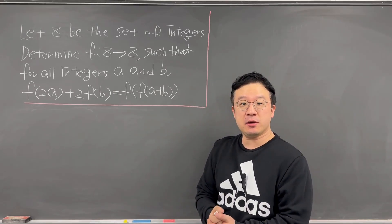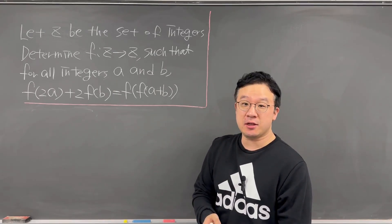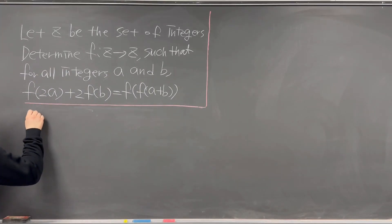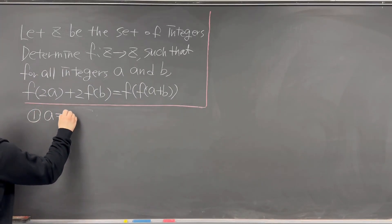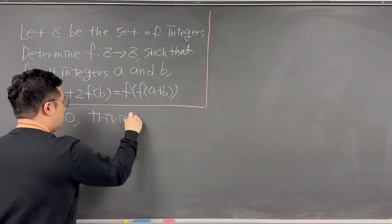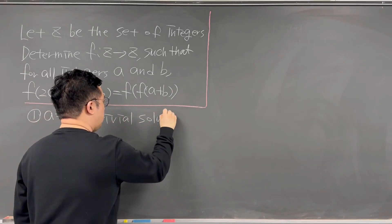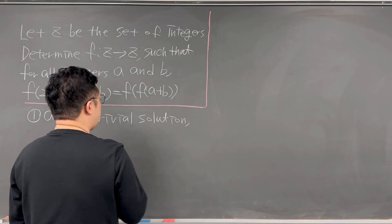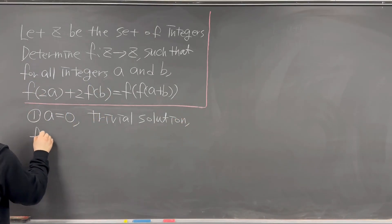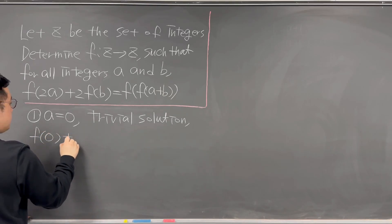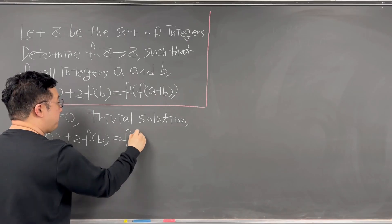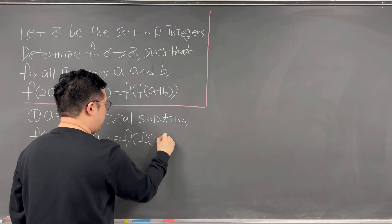Since this is a functional equation, maybe the good way to start is to plug in some easy numbers. So case number one, I will assume a is equal to 0, mostly for the trivial solution. Then let's plug in 0 to the a. Then we should have f of 0 plus 2 times f of b equal to f of f of b.